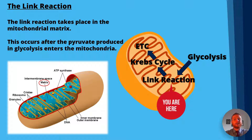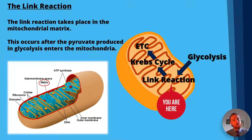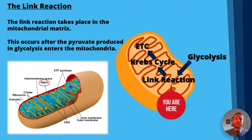The link reaction is the second stage in aerobic respiration. Glycolysis comes first, and pyruvate moves from the cytoplasm into the mitochondria. It can do that because it's smaller than glucose, being a three-carbon molecule rather than the six carbons that glucose contains.